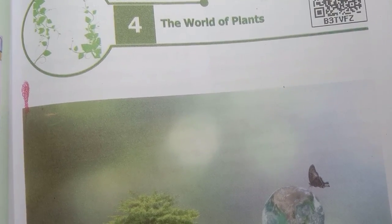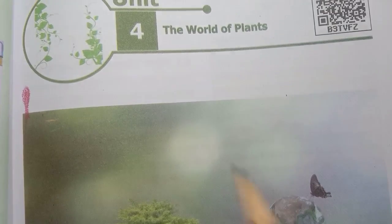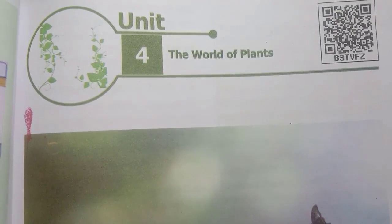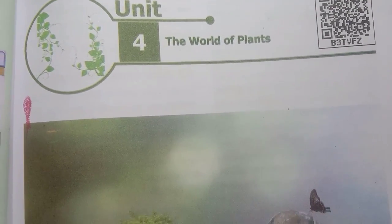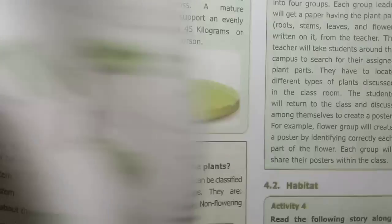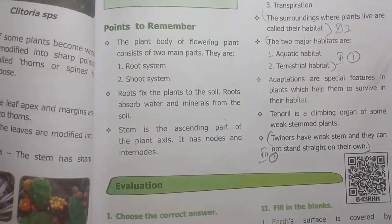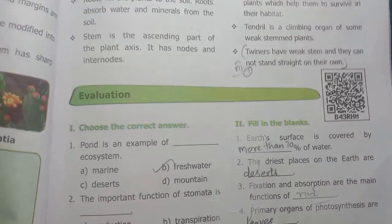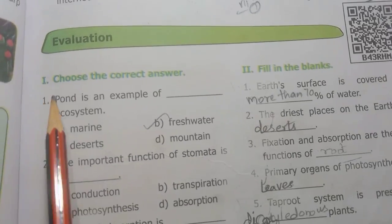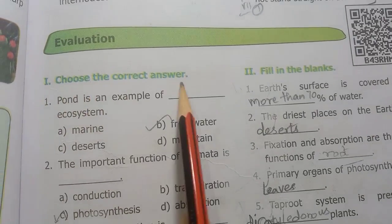In this video, 6th standard science, Term 1, Unit 4 — The World of Plants. We will look at the book back exercise, page number 65, Roman numeral 1 — Choose the correct answer.